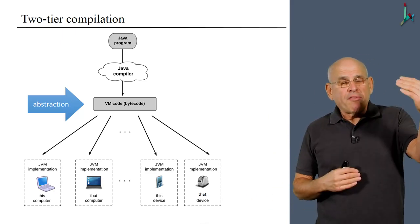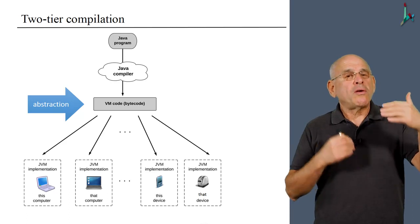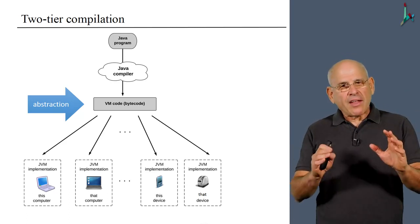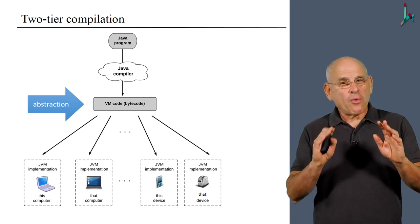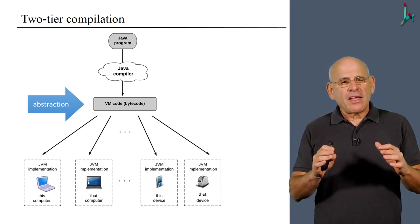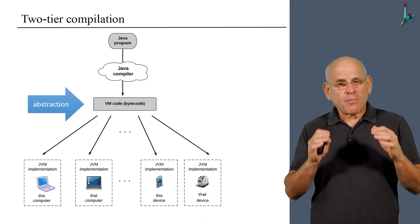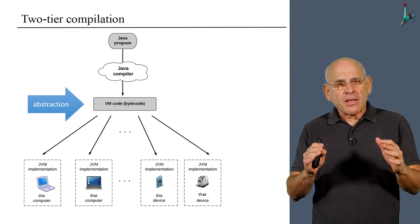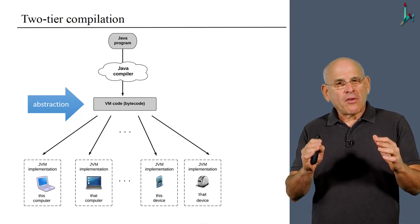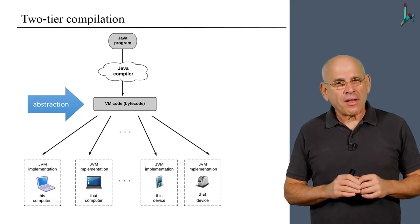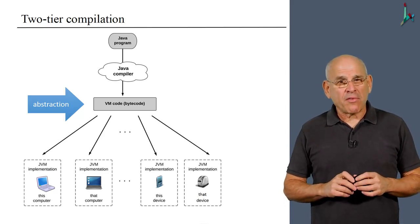We have broken a very complex task into two simpler tasks, which is always desirable. In fact, Java should not take credit for this idea of two-tier compilation, because the idea and the practice is about 30 years old. And in fact, if you think about it, it's almost, believe it or not, almost 90 years old, as I will comment later on toward the end of this module.